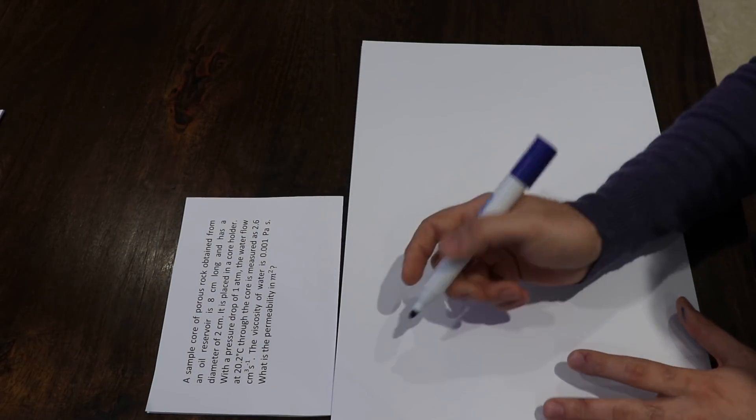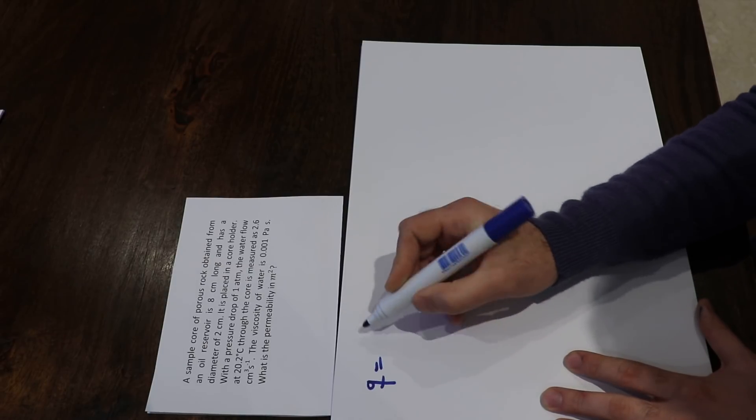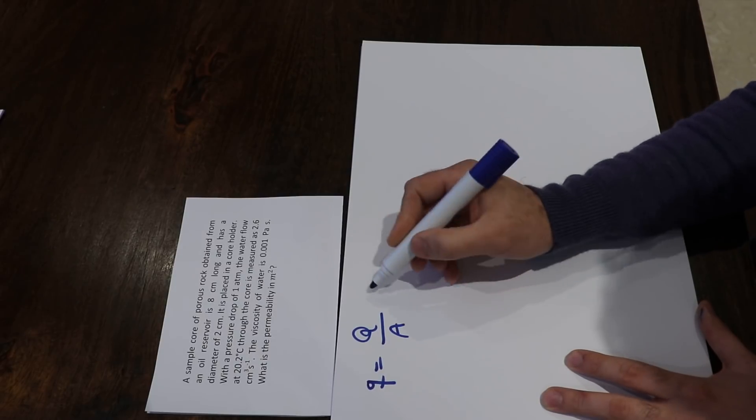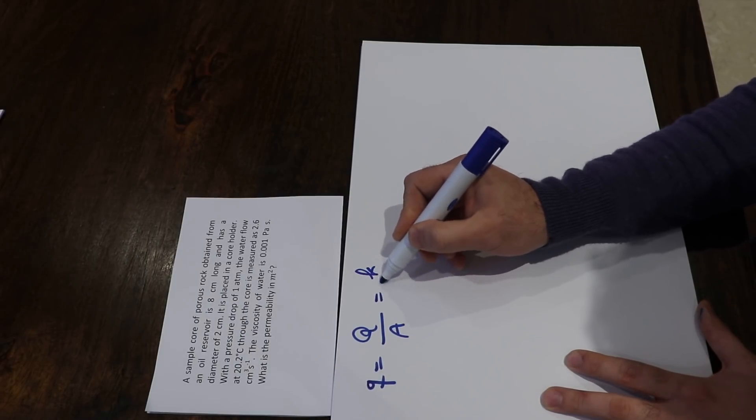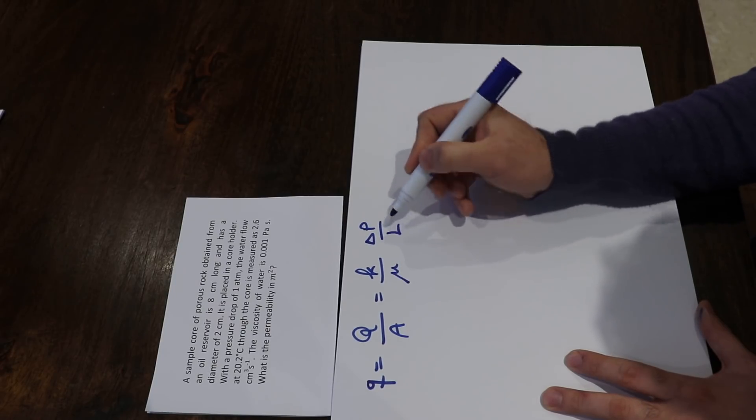To solve this question, you simply need to write Darcy's law: q = Q/A (flow rate divided by cross-sectional area), which equals K (permeability) divided by viscosity times delta P over L.